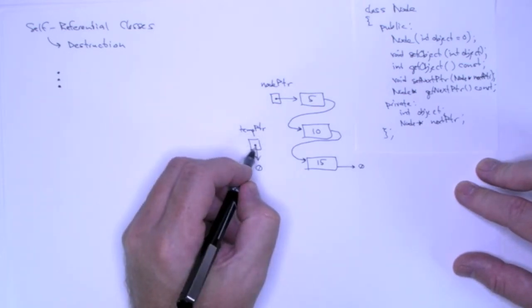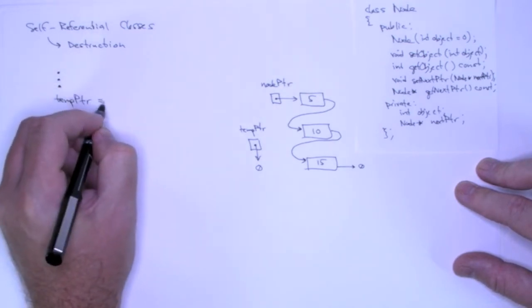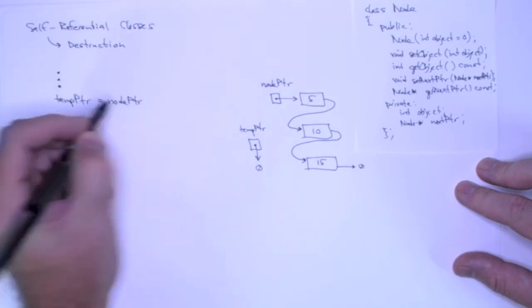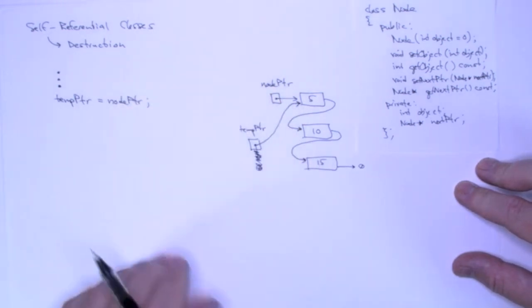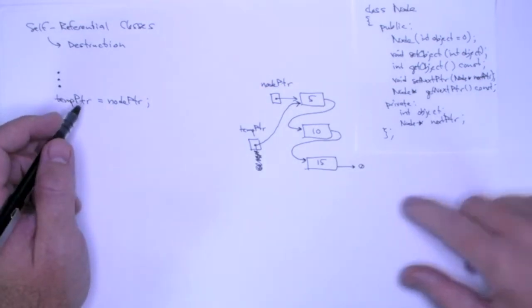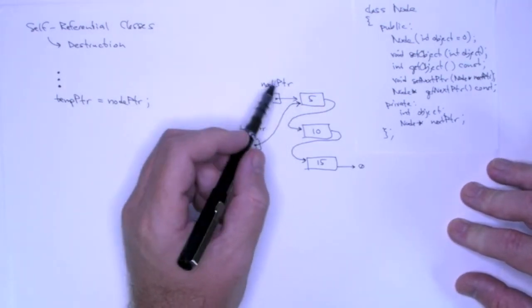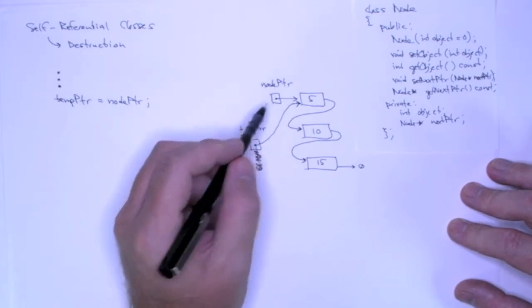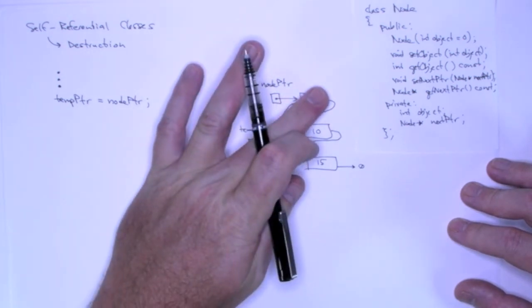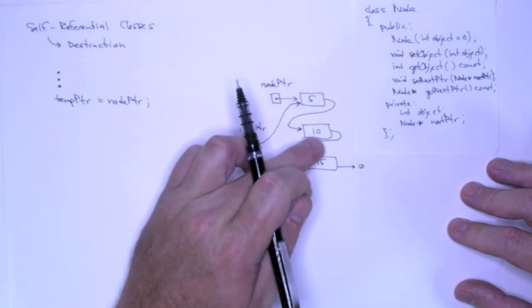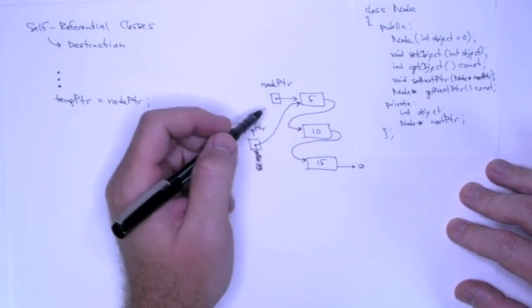We're going to start by setting temp pointer to node pointer. The order of operations — and a lot of times when you're manipulating linked lists, the order of operations is critically important. I have to be very careful here because if I deleted node pointer or temp pointer, meaning if I delete the object that they point to, which is 5, then suddenly I have lost my ability to get to the node containing 10 and 15. So I have to be very careful here.